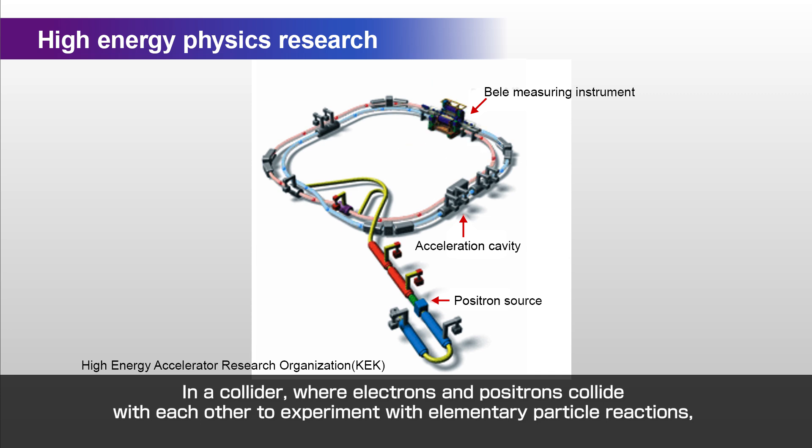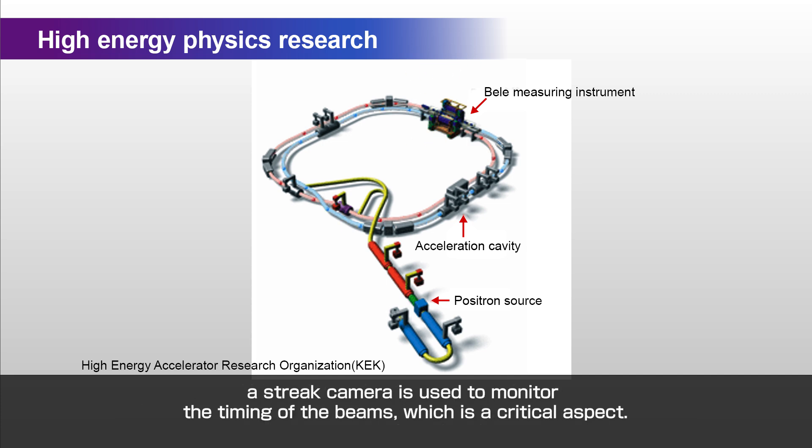In a collider, where electrons and positrons collide with each other to experiment with elementary particle reactions, a streak camera is used to monitor the timing of the beams, which is a critical aspect.